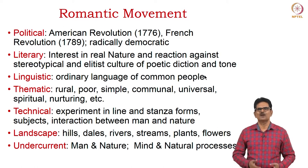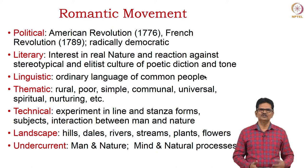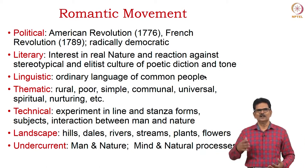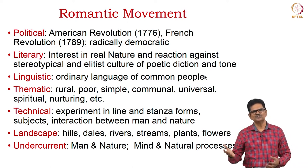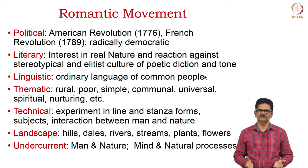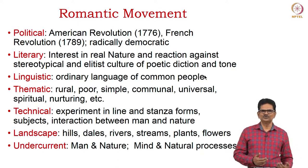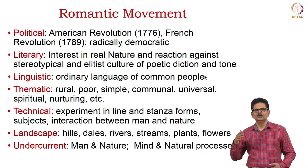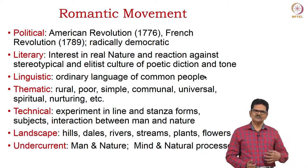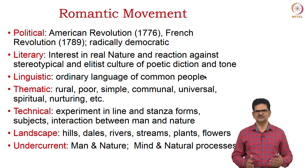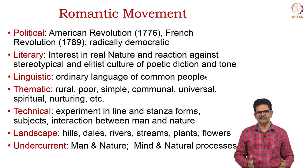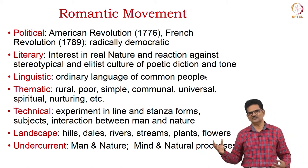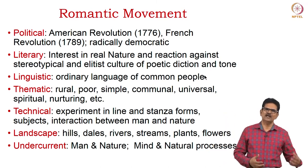In language, they chose to write about common people in ordinary language. When it comes to themes, they chose subjects from rural poor areas, simple people living in community or common areas, and they were thinking about people's relation to spirituality and the ability of nature to nurture them in an environment of universal peace. Technically, poets were experimenting in line and stanza forms, and in their interaction between man and nature. They brought lots of landscape into poetry — hills, dales, rivers, streams, plants, flowers. The major undercurrent of Romantic poetry is the relationship between man and nature, and the interaction between mind and the natural processes. They noticed a close resemblance between what is happening in nature and what happened in their own mind.